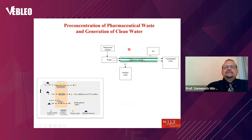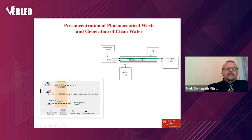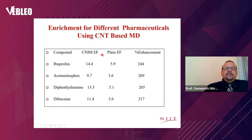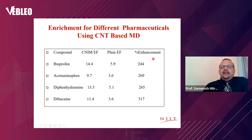Another application is treating pharmaceutical waste. Pharmaceutical materials are increasingly found in water supplies, contributing to antibiotic resistance and other concerns. Using our carbon nanotube membrane, we bring in dilute pharmaceutical wastewater, collect purified water on one side, and get a concentrated waste stream on the other. We achieve 14-times concentration in one pass — 240 to 317 percent higher enrichment than with conventional membranes. The carbon nanotubes play a critical role in this concentration enhancement.